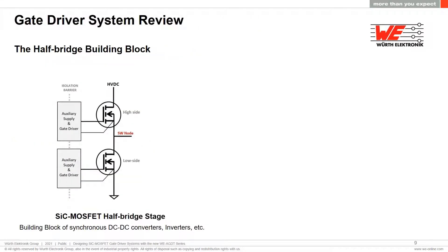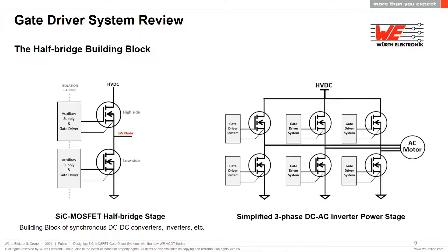Representing the gate driver system as a block connected to the SiC MOSFET, we have two silicon carbide MOSFET devices connected in a half-bridge configuration, each with its own auxiliary supply and gate driver IC. The high side device is connected to the high voltage supply and the low side to ground. This half-bridge configuration is a basic building block of many power electronic applications like synchronous buck and boost converters, single-phase to multi-phase inverters. Most SiC device manufacturers provide power modules with internal half-bridge configuration. A simplified three-phase inverter power stage is built with three half-bridge stages in parallel, typical for driving AC motors.